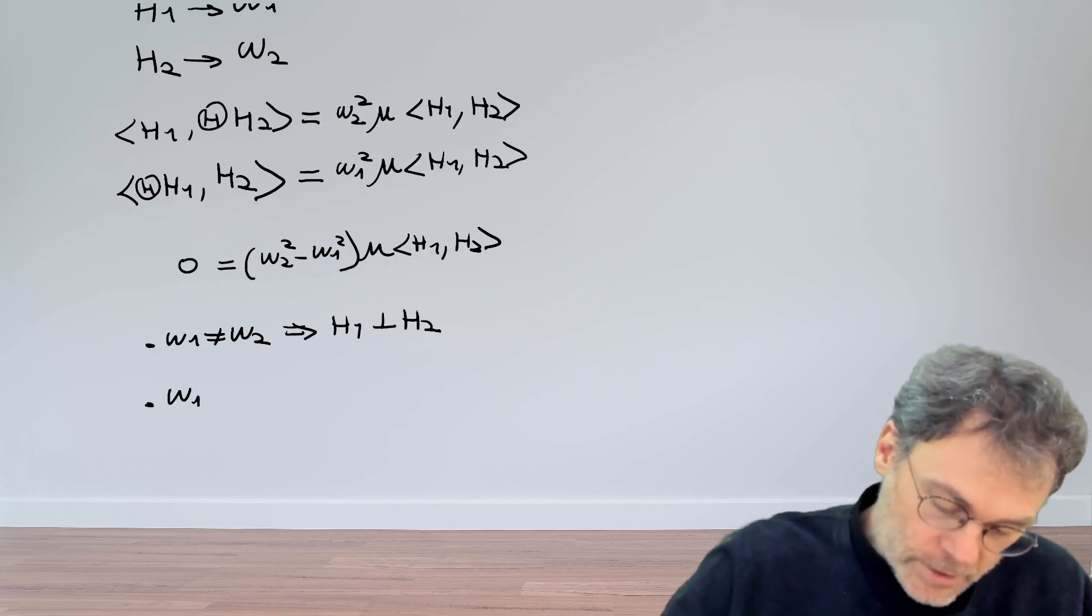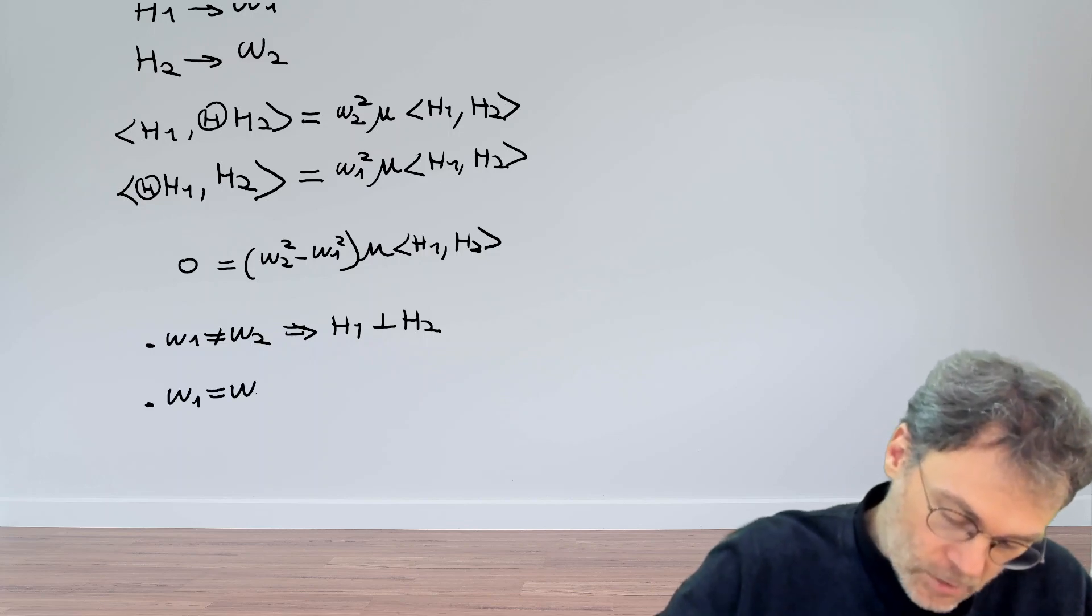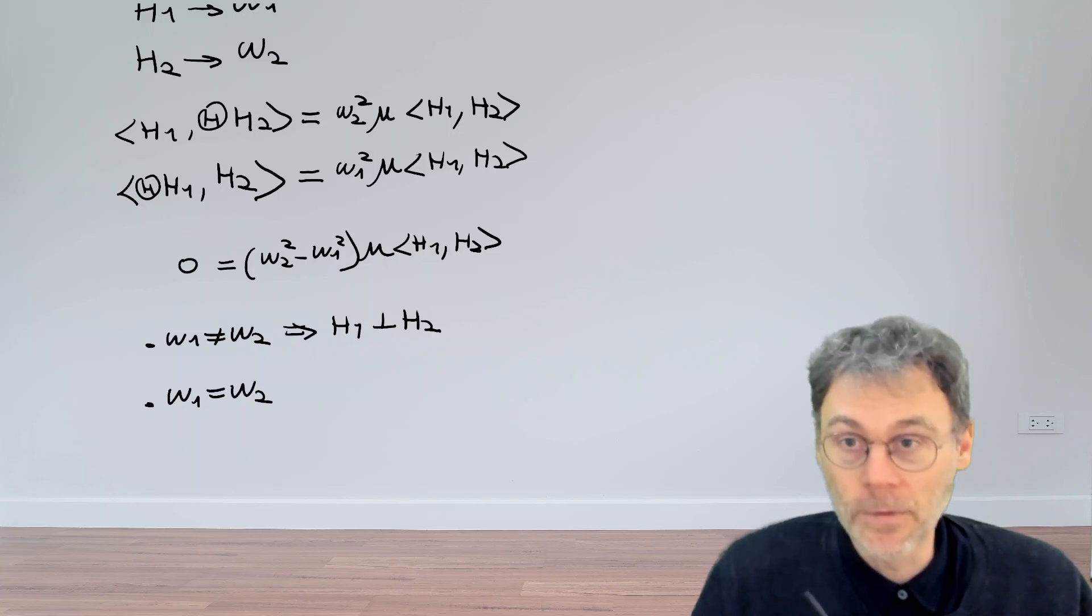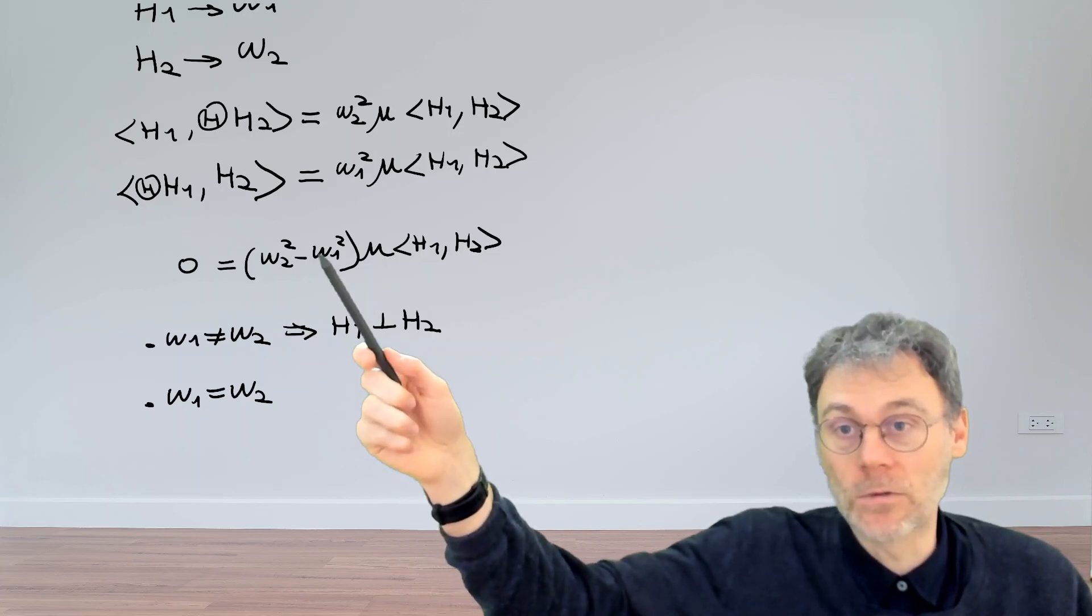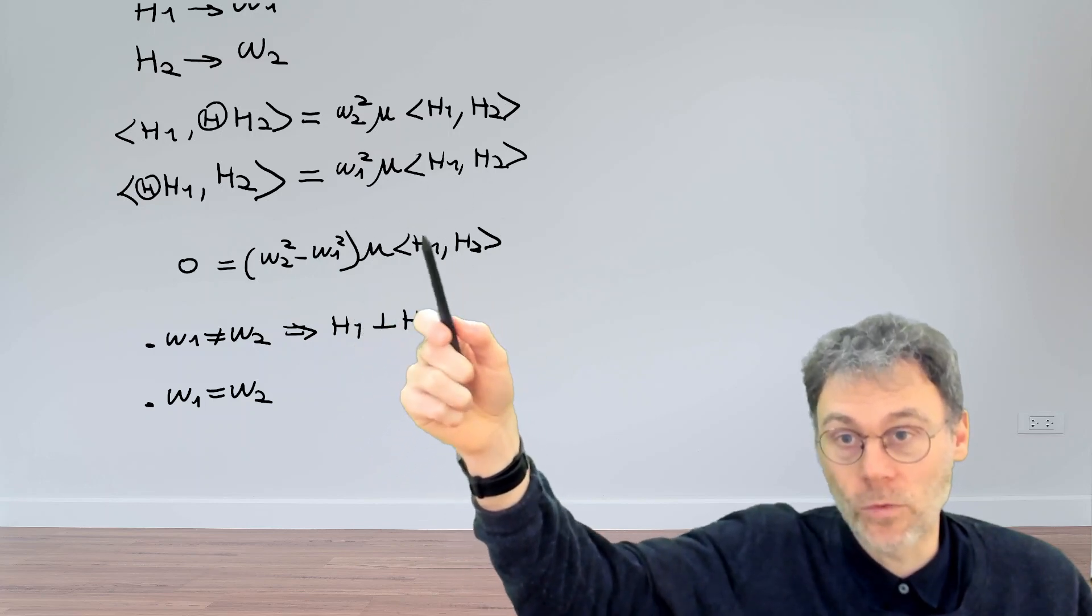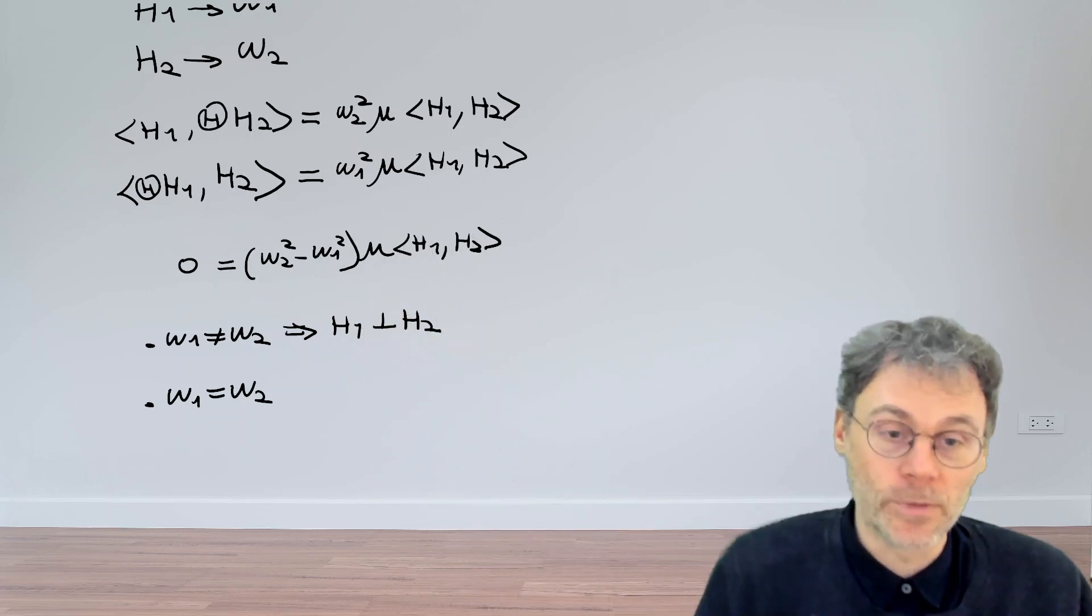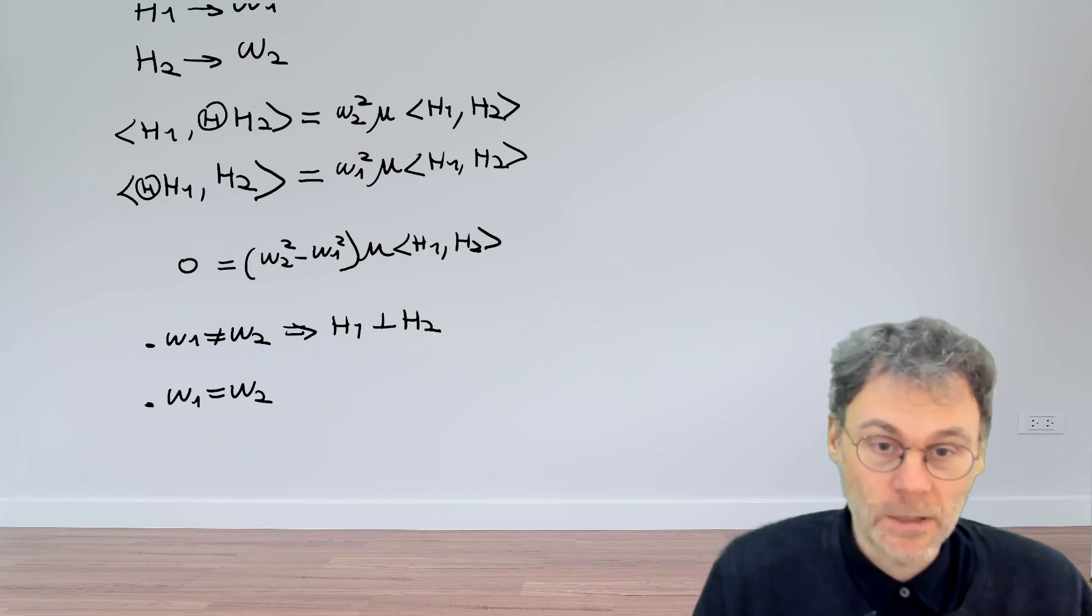Of course, we need to deal with the situation where omega 1 and omega 2 happen to be the same. That's a very specific case. So now we have zero is equal to zero, and this guy here which we're interested in disappears. So now we need to be a little bit more careful.